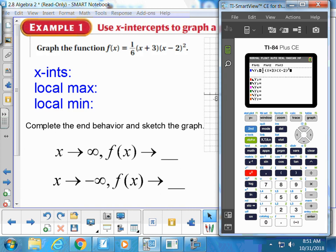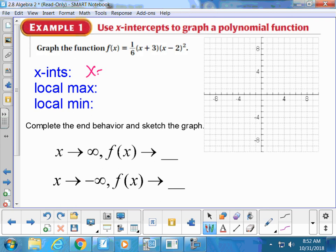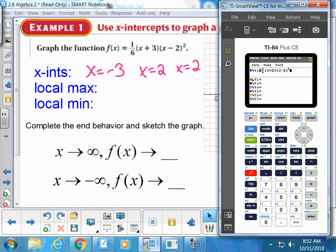Before I even hit graph, you should have an idea where the solutions are. What's the solution to this binomial? Negative 3. What's the solution to this binomial? Positive 2. And there's one more x minus 2 because that square, so x equals 2 is a double solution. So it's going to be x equals negative 3, x equals 2, and x equals 2. Let's see if that's where those x-intercepts are.